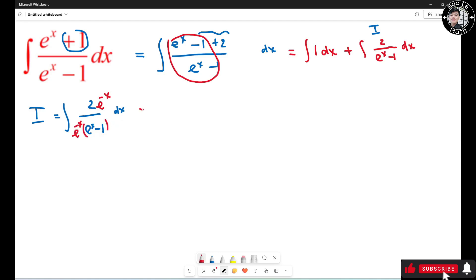This becomes the integral of 2e to the negative x over 1 minus e to the negative x dx.